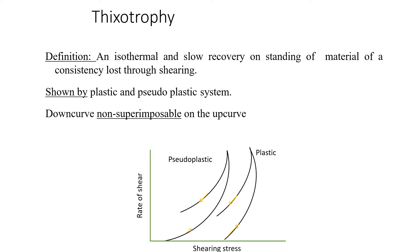That breakdown of structure does not immediately get reformed when we remove or reduce the stress. This is defined as thixotropy: an isothermal and comparatively slow recovery on standing of a material of consistency lost through shearing. It can be applied only to shear-thinning systems, and the typical rheograms for both plastic and pseudo plastic types are shown here. In the pseudo plastic case the curve starts near the origin, whereas for the plastic case it starts after a yield value.